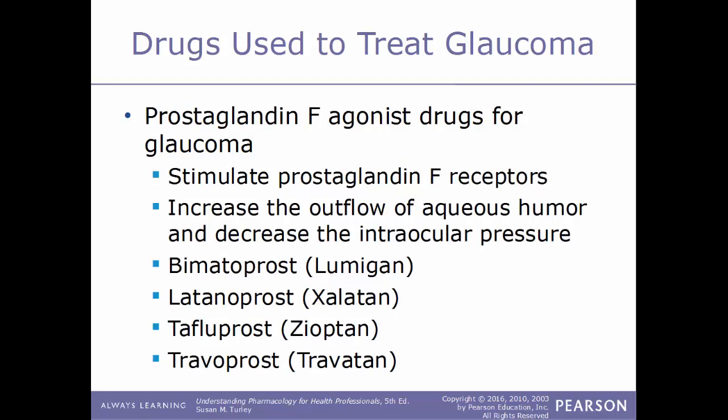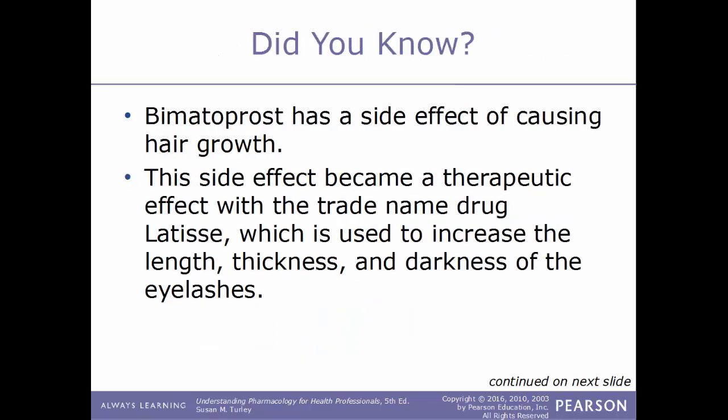Another class that will help treat glaucoma are prostaglandin-F agonist drugs. These work to stimulate prostaglandin-F receptors, increasing the outflow of aqueous humor, which lowers intraocular pressure. Examples include bimatoprost, sold as Lumigan; latanoprost, sold under the name Xalatan; tafluprost, sold under the name Zioptan; and travoprost, sold under the name Travatan.